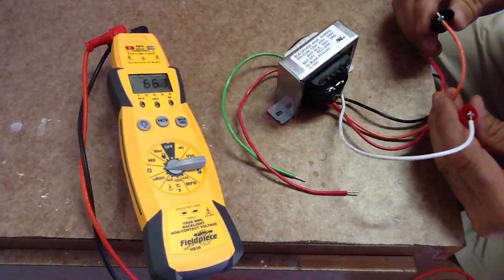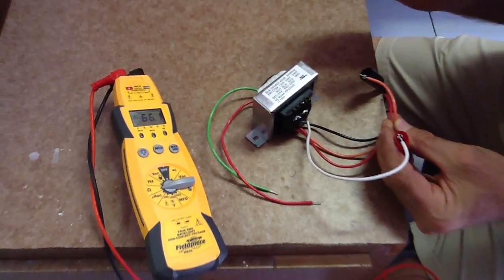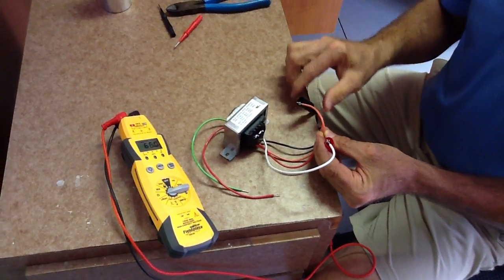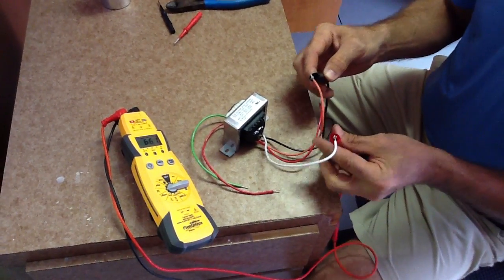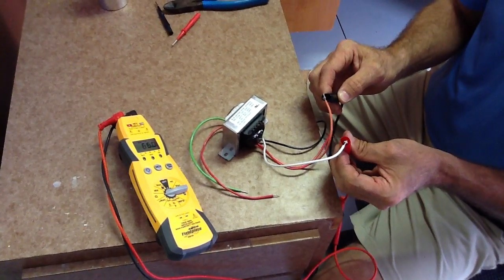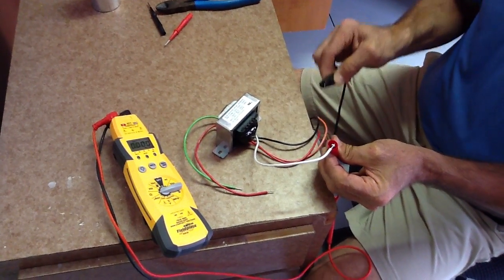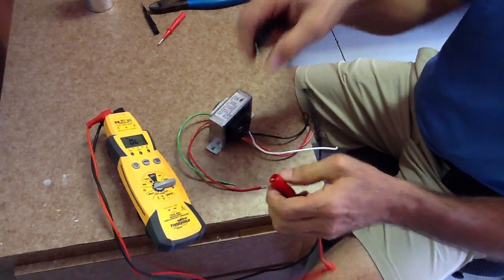240 volts. So what that means is the higher the resistance, the higher the voltage, the lower the amp draw is. So 66 ohms. When you get out there, you check your field piece, you check your voltage, you just want to check your windings. Let's go over here to the 24 volt side.